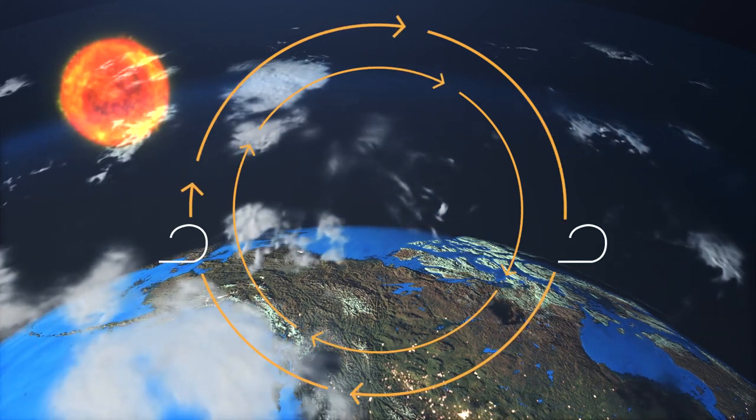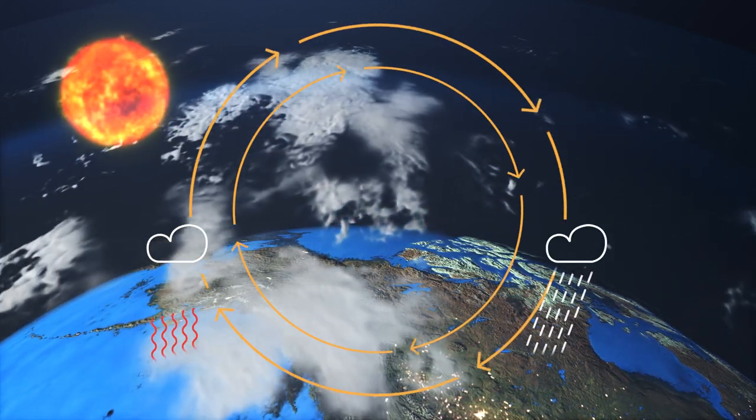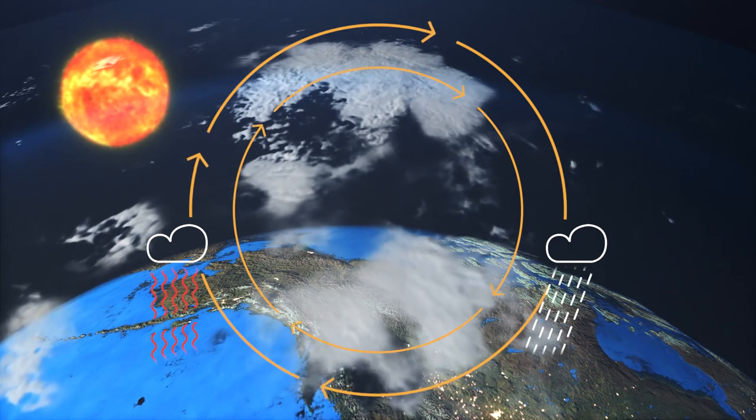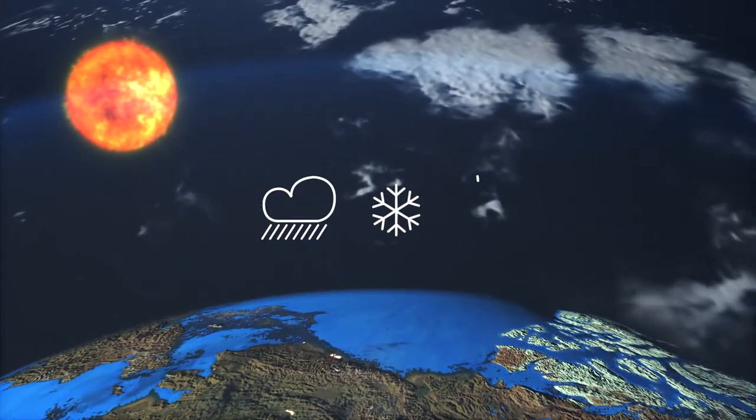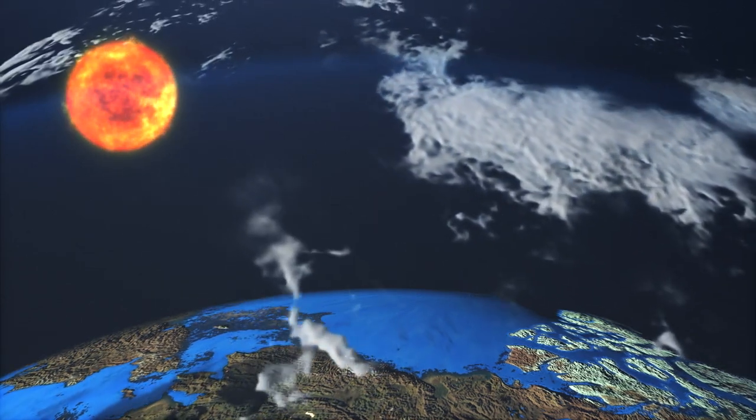As well as affecting the Earth's temperature, the sun drives our planet's water cycle. By constantly evaporating water into the atmosphere and returning it as rain, snow and dew, the sun makes liquid water possible.